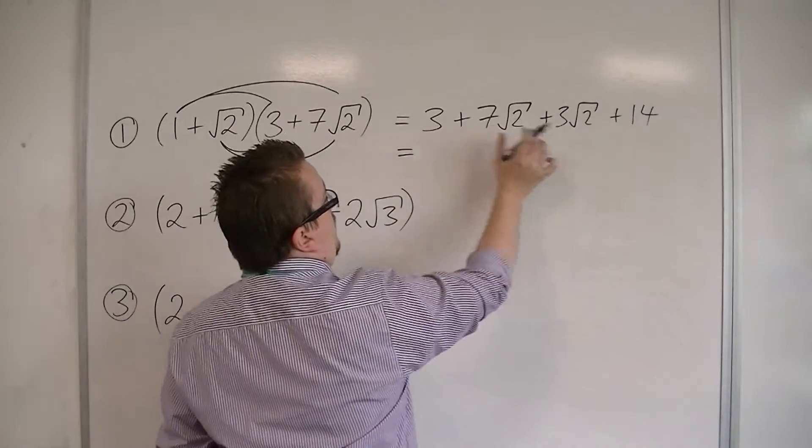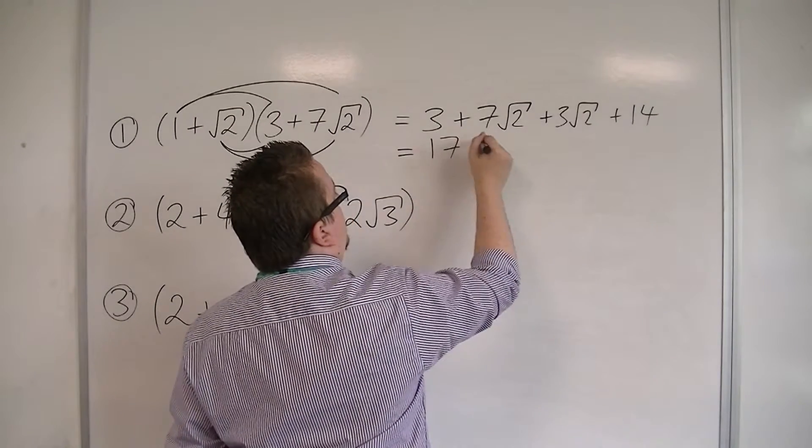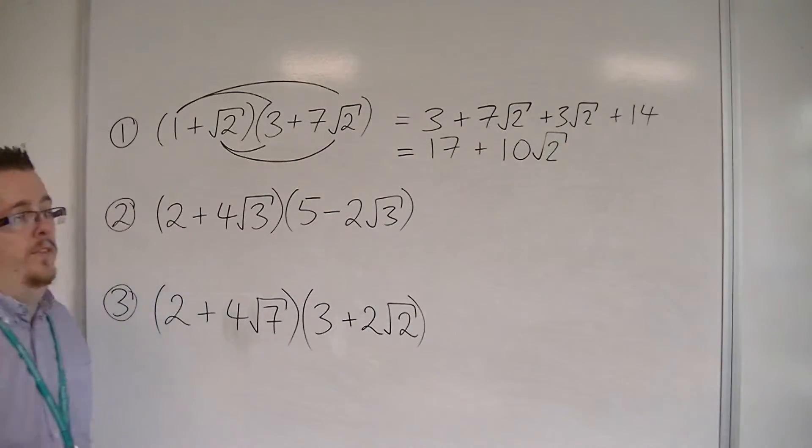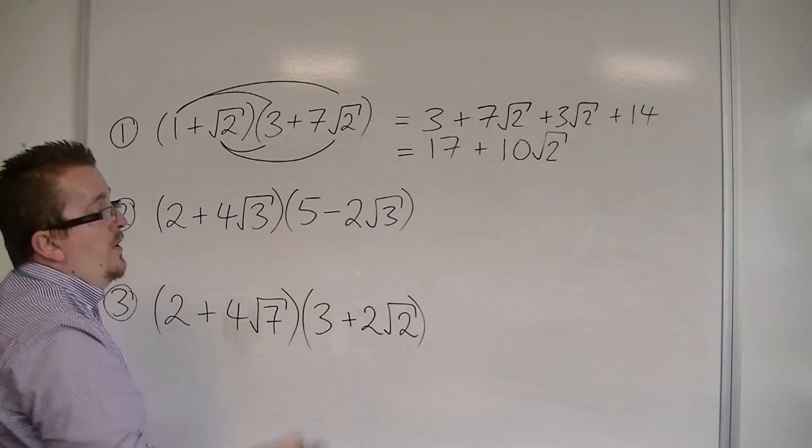So in total, I've got 3 plus 14 is 17, plus 10√2. 7√2 plus 3√2. And that would be my finished answer.